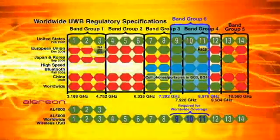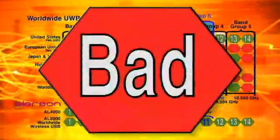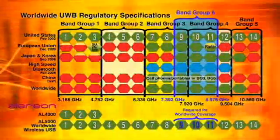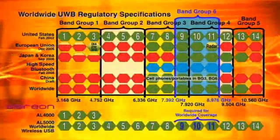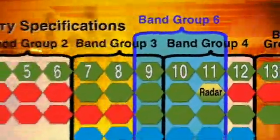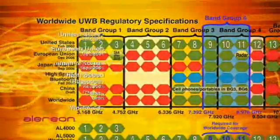The key for this chart is fairly simple: green is good, red is bad, and yellow is a so-so situation where things are actually going to be changing. Looking at this particular spectrum, above 6 GHz there are really only a couple of band groups available, and there's only one band group — band group 6 — that is available in all regions of the world as legal spectrum.